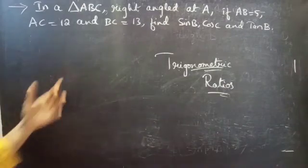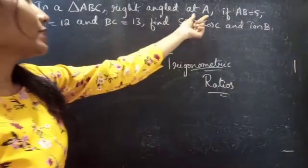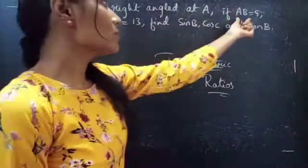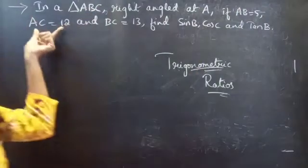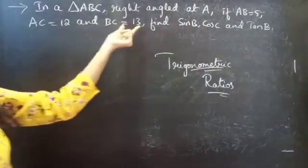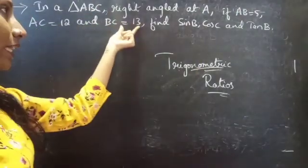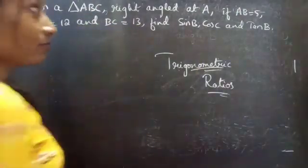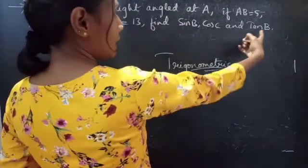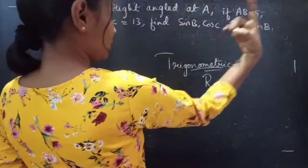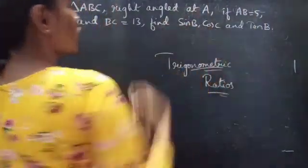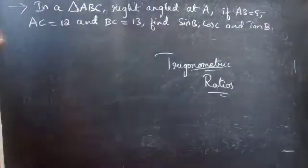We are given a right angle triangle, right angle at A, with AB equals 5, AC equals 12, and BC equals 13. With reference to angle B we have to find sine B and tan B, and with reference to angle C we have to find cos C.